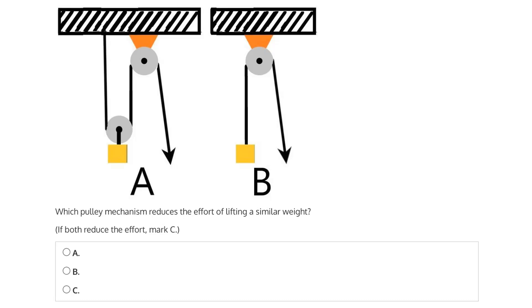The question says which pulley mechanism reduces the effort of lifting a similar weight? Is it A, where we have a system of two pulleys, one fixed and one movable, B, where we have a single fixed pulley, or if both reduce effort, then mark C.